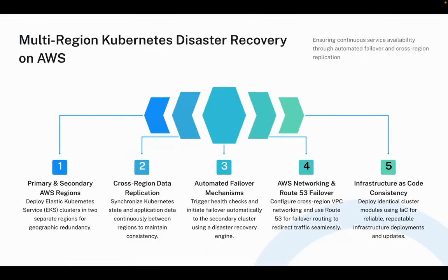Now let us look at the multi-region strategy. First, we deploy our primary and secondary EKS clusters in two completely separate AWS regions, which protects us from region-wide outages. Second, we perform continuous cross-region replication of Kubernetes state and application data so that the secondary cluster always has an up-to-date copy. Third, a disaster recovery engine monitors the health of the primary region and can automatically trigger failover whenever needed. Fourth, Route 53 provides cross-region routing capabilities and failover logic that make traffic shifts seamless for users. Finally, we ensure all cluster components are deployed using infrastructure as code so that both regions follow the same architecture and remain perfectly aligned.